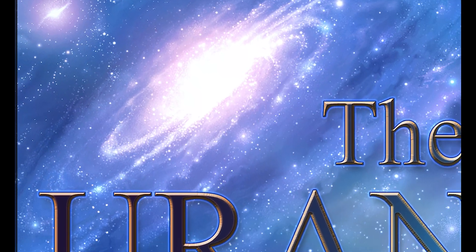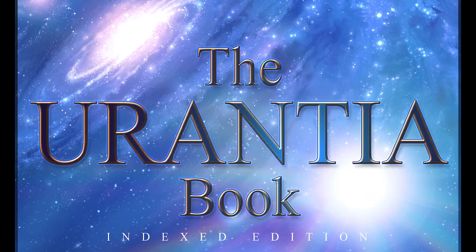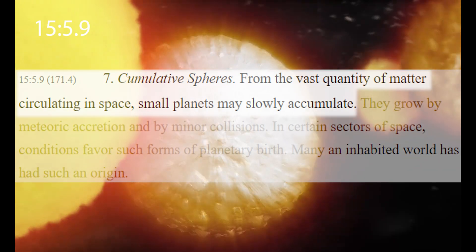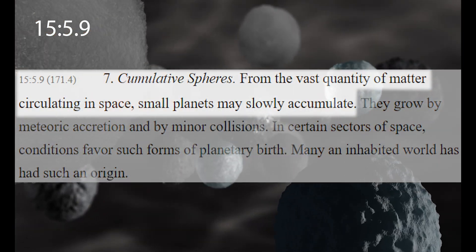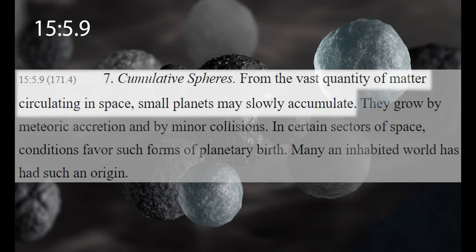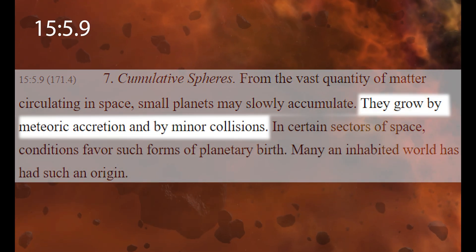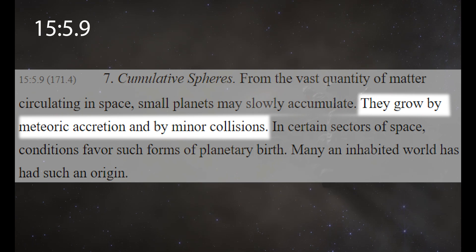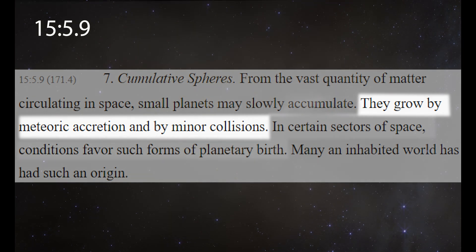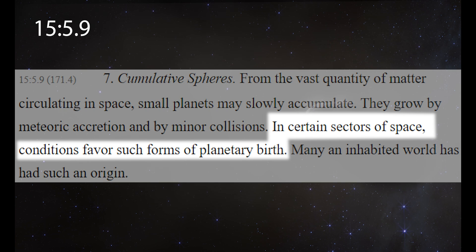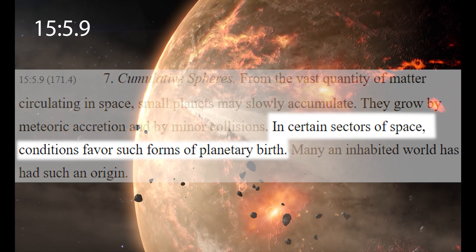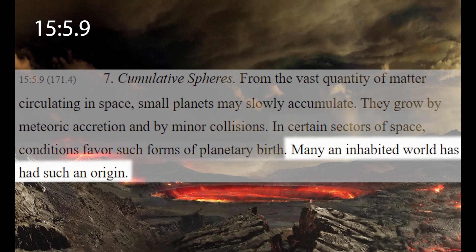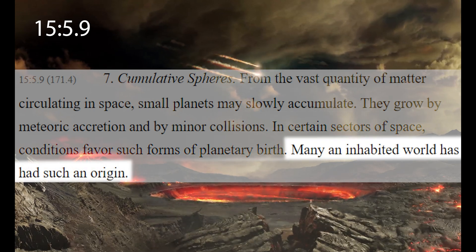The Urantia Book explains that planets do form this way, describing them as Cumulative Spheres. From the vast quantity of matter circulating in space, small planets may slowly accumulate. They grow by meteoric accretion and by minor collisions. In certain sectors of space, conditions favour such forms of planetary birth. Many an inhabited world has had such an origin.